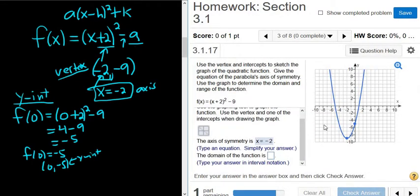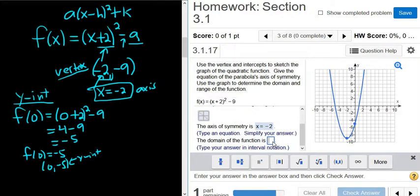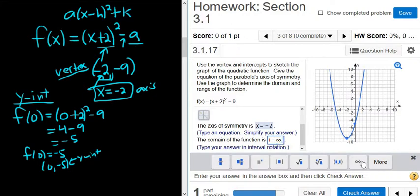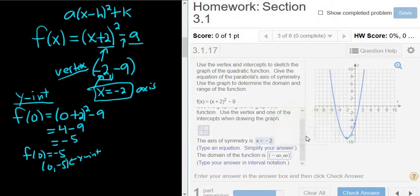Now it wants the domain. The domain is the set of all inputs. It's all of the x's that give us y values. Well, I can pick any x on this graph and it's going to give us a y value. If I pick x equals 4, it gives us a y value that's off the screen. If you pick x equals 0, it gives us this y value here. Pick x equals negative 1, it gives us this y value here. You can pick any x and you always get a y value. The domain is all real numbers. So, parentheses, negative infinity to infinity, parentheses, and then click check answer. Good stuff.